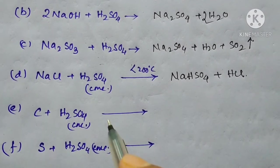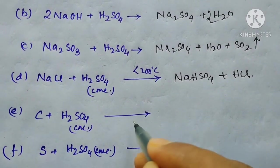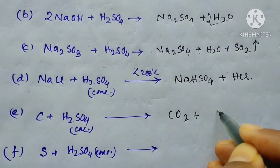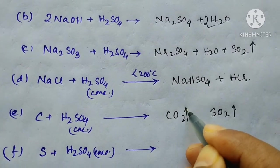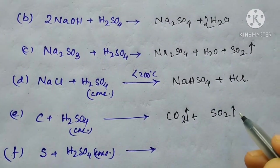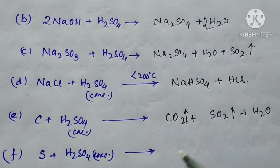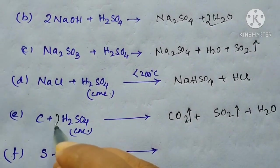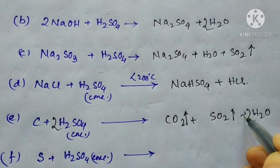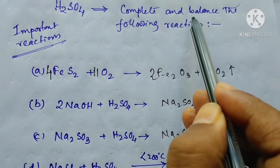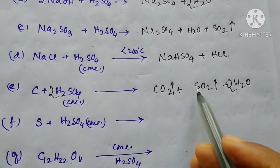The next reaction is carbon plus sulfuric acid, producing carbon dioxide and sulfur dioxide — both are gases, so you have to mention them with an upward arrow — and water. Balancing is a must. The balanced reaction is given here, so complete and balance the reaction.